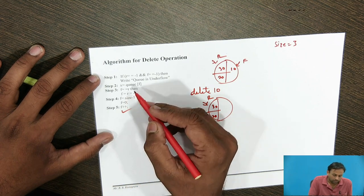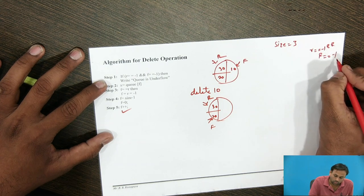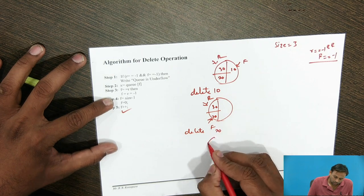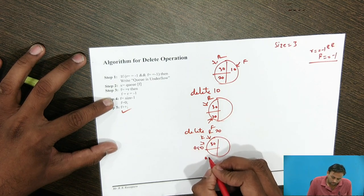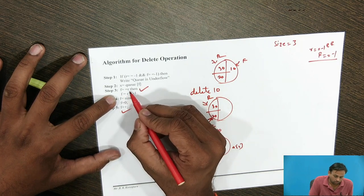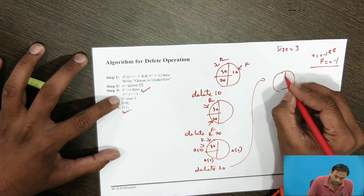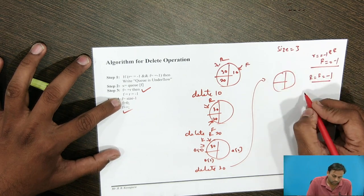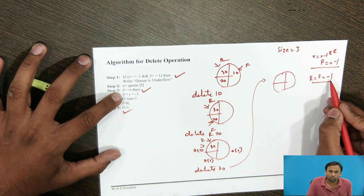The empty condition is: R == -1 AND F == -1. If we delete 20, F moves further. If we then delete 30, both F and R are pointing to the same element, so we re-initialize both to -1. The queue is now in empty condition. When an element is deleted and F == R, we set both F and R to -1.